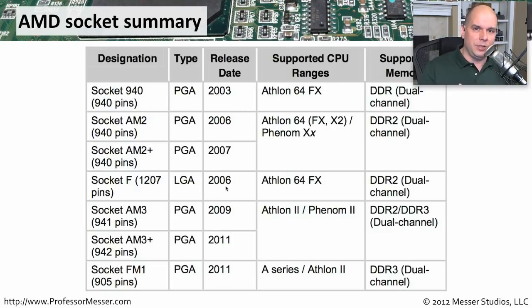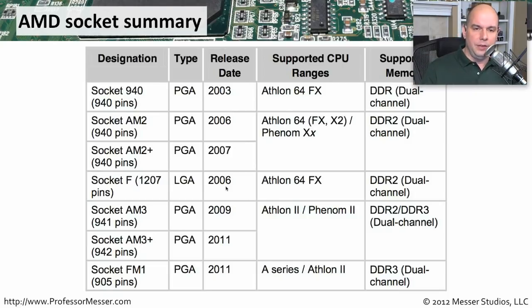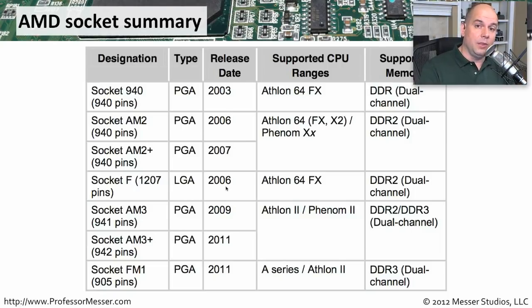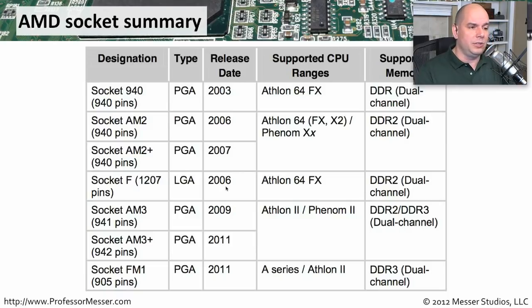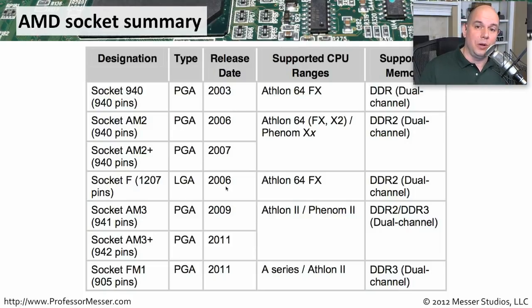Even though it looks like a big list, a lot of these sockets and CPUs are very similar to each other. If you watch the video I have on CPUs, it'll be very clear. It is a bit of memorization, but it's nice to know the process of using different sockets. It helps if you're building your own desktop or server and buying a motherboard — if it says it needs an AM3+, once you go through this video, you'll know exactly what that means.